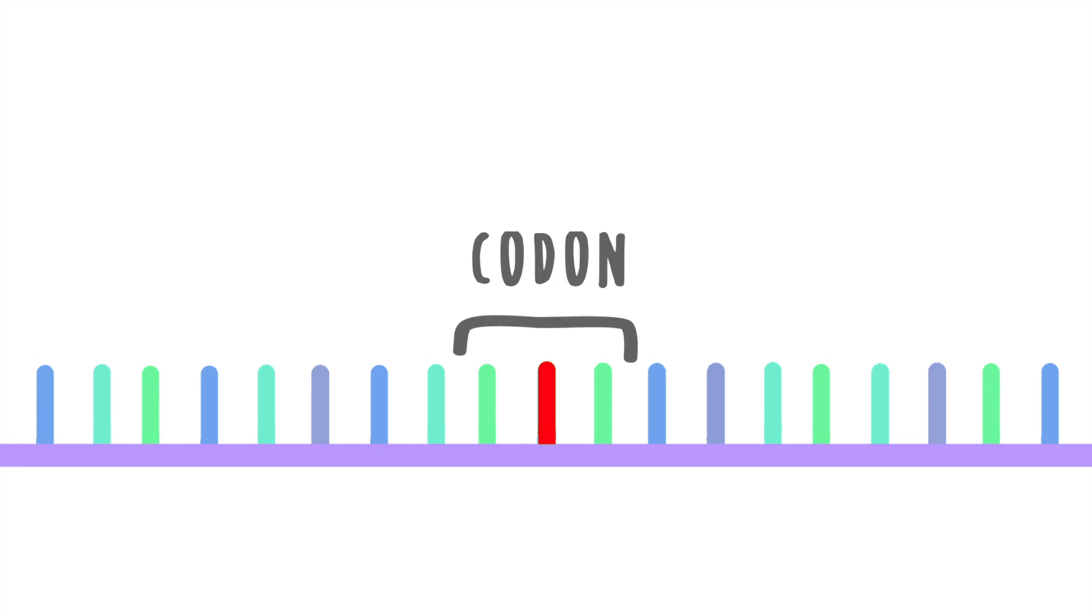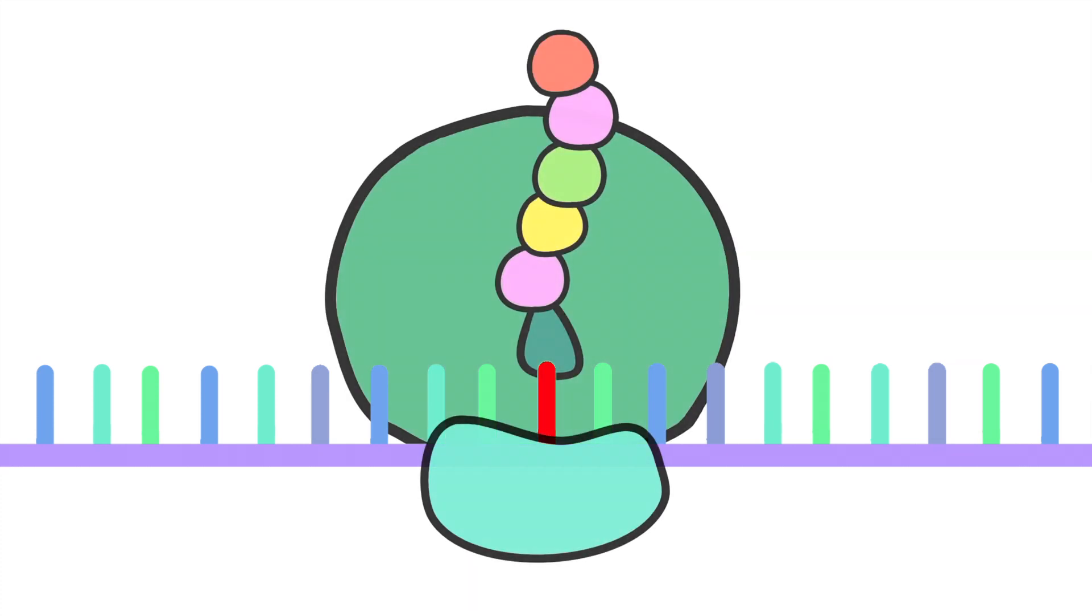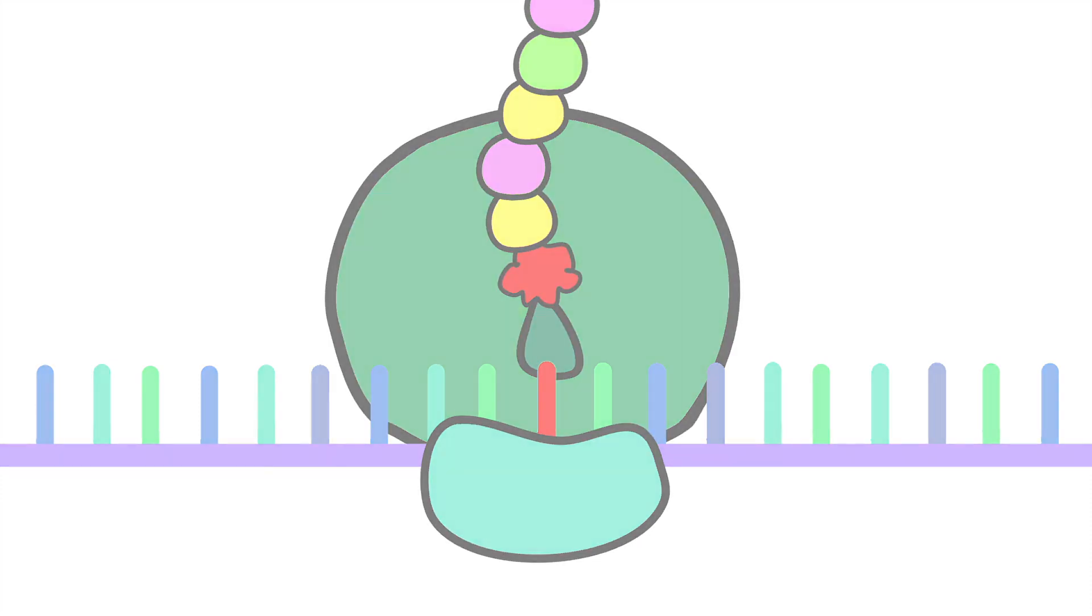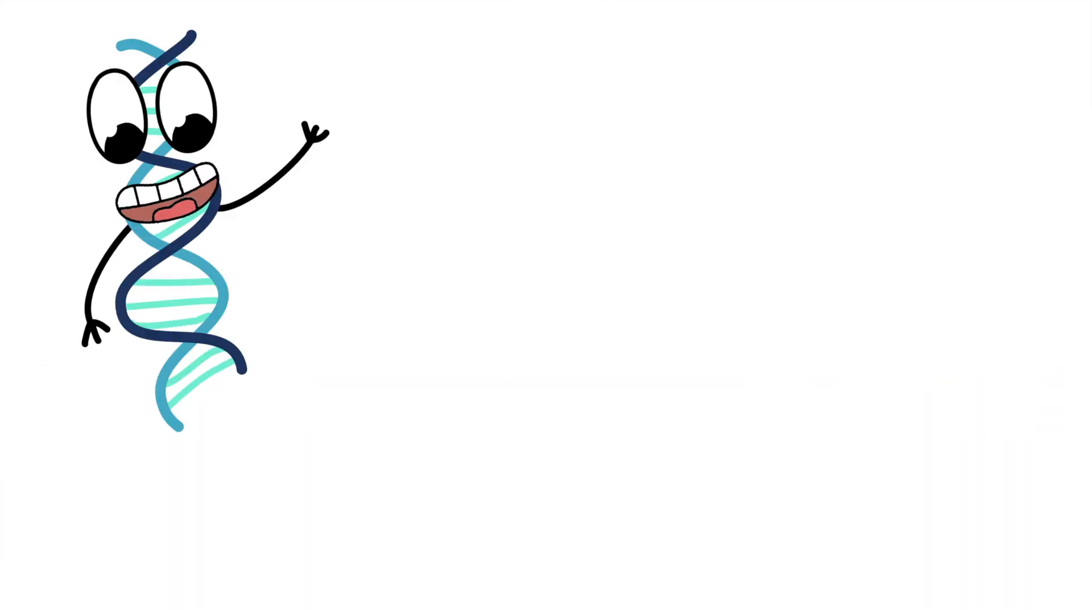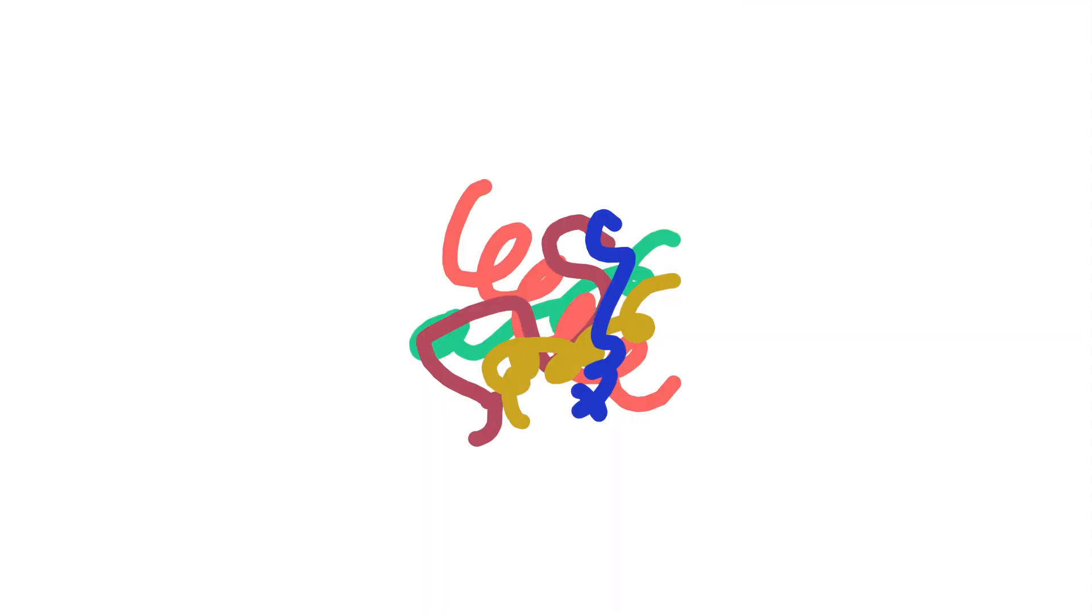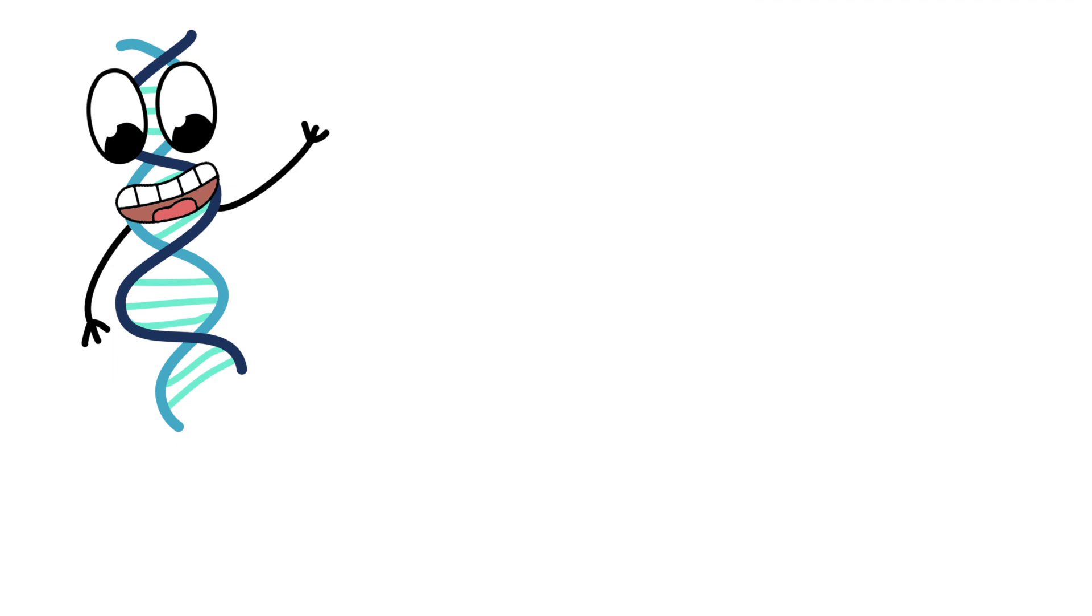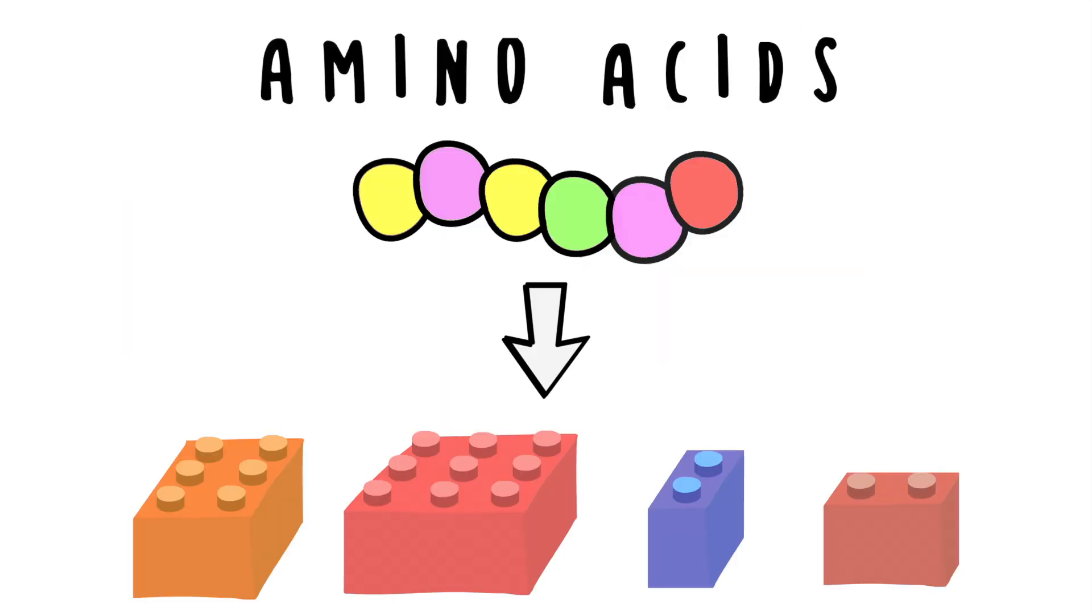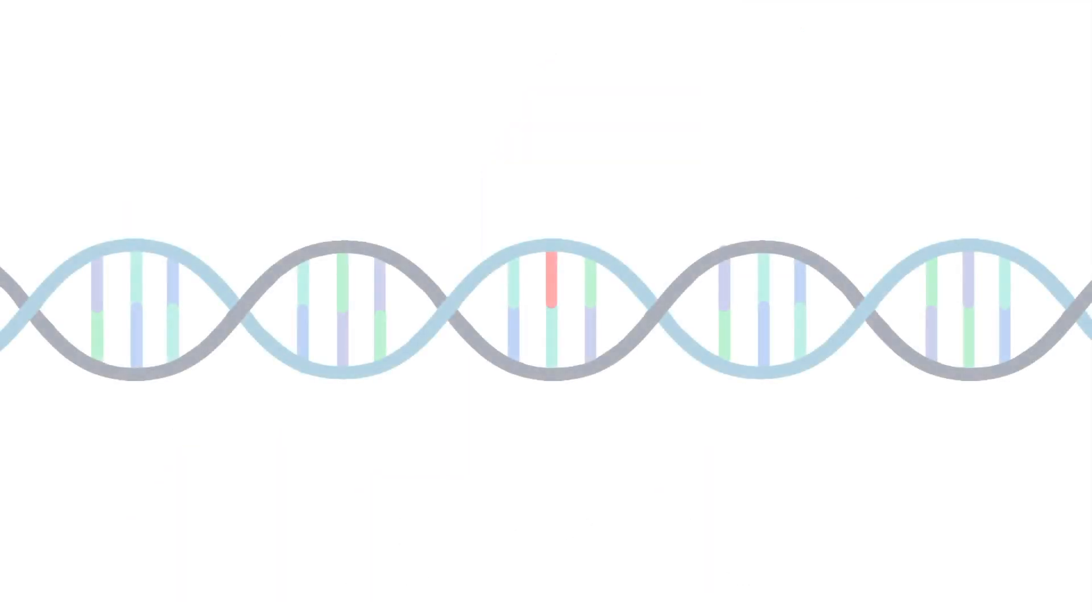Thus, if there's a mutation in the DNA, the codons containing these mutations will code for the wrong amino acids, which can defect the protein. To simplify, the DNA provides instructions for making the building blocks of proteins. These proteins help with the structure and function of our body. However, in some cases, the DNA provides wrong instructions, which in turn makes the wrong amino acids. As a reminder, amino acids are like Lego blocks that form proteins.